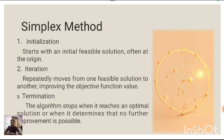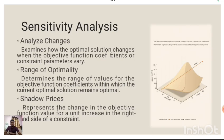Simplex Method. First, initialization starts with an initial feasible solution, often at the origin. Second, iteration repeatedly moves from one feasible solution to another, improving the objective function value. Third, termination. The algorithm stops when it reaches an optimal solution or when it determines that no further improvement is possible.